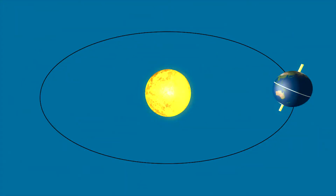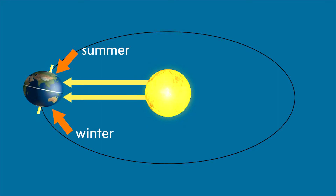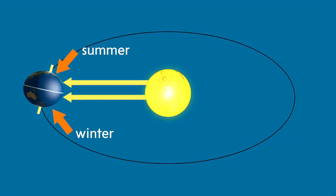In the southern hemisphere, the seasons are opposite of what they are in the northern hemisphere. So when it is summer in the northern hemisphere, it is winter in the southern hemisphere. This is because when Earth is tilted toward the sun in the northern hemisphere, it is tilted away from the sun in the southern hemisphere.